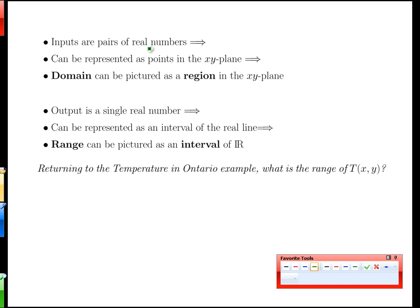One way to think about these functions is that because our inputs are pairs of real numbers, we can think of the points that we're sending as input as points on the plane, and so the domain can be pictured as a region in the x-y plane. We would have an input of x and y, and we'd have regions which are valid x and y points and regions which are not valid. The output is a single third number, and it can be represented as an interval on the real line. Our classic would be to have z as our output or temperature in our previous example, and we can have a range of that interval being the outputs.